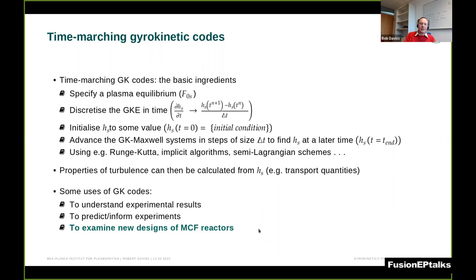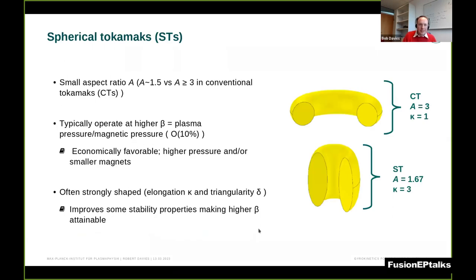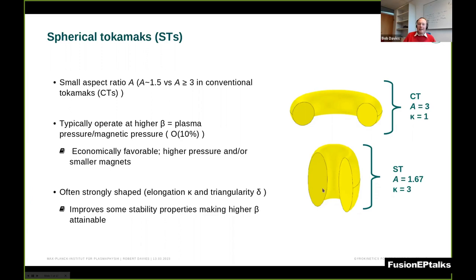To give a specific example, I'll talk about some work from my PhD on spherical tokamaks. The spherical tokamak is characterized by a small aspect ratio — that's the major radius divided by the minor radius. It typically operates at a higher plasma beta than the conventional tokamak and is usually more strongly shaped, for example by elongating the plasma vertically. Here's a cartoonish picture of a conventional aspect ratio tokamak with an aspect ratio of three, and then a spherical tokamak at the bottom.